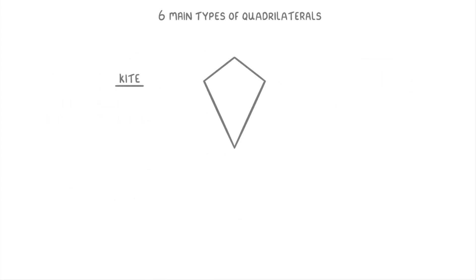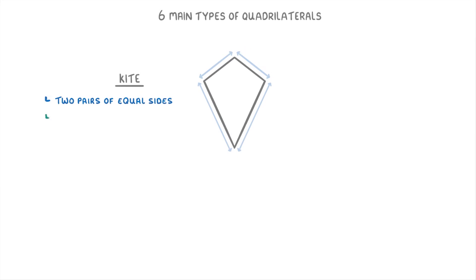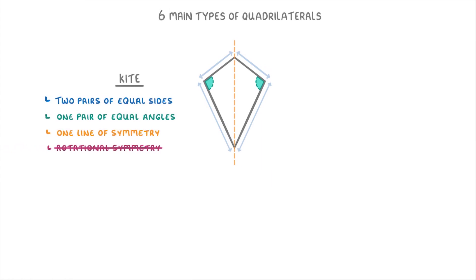Lastly, we have the kite, which is the same shape as the traditional kite that you fly in the sky. The important features are that it has two pairs of equal sides, one pair of equal angles, and one line of symmetry straight down the middle. Kites don't have any rotational symmetry.